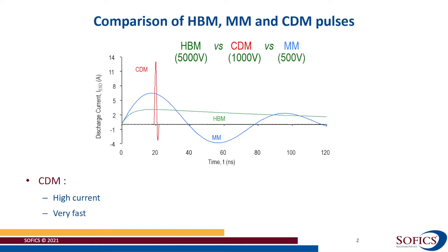Third, there are several paths through which the CDM discharge current can flow to the discharge pin. As such, CDM failure might occur in core parts of the IC while the ESD protection circuit survives unaffected.